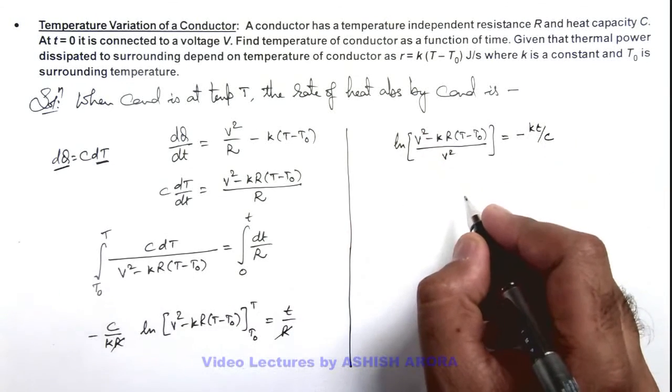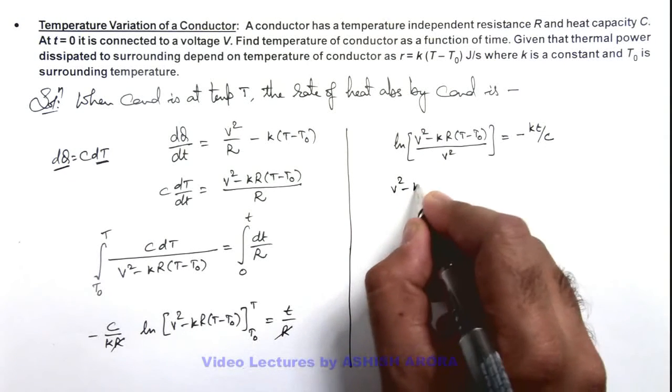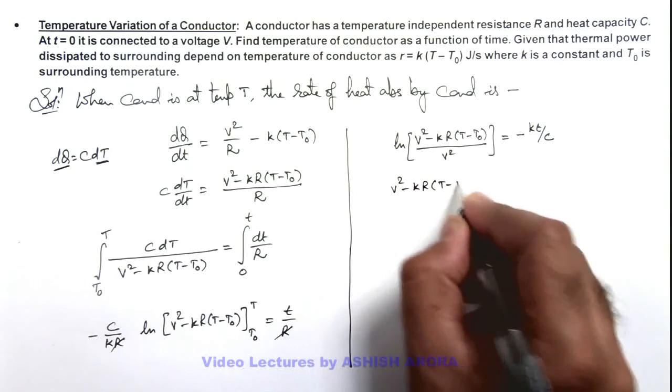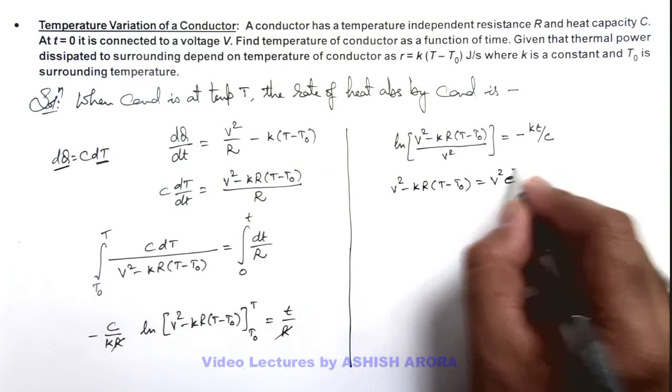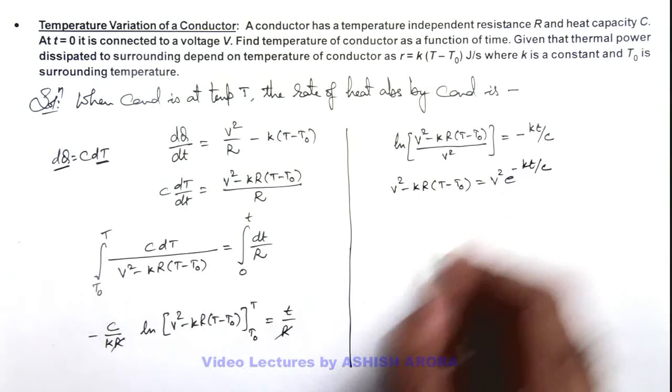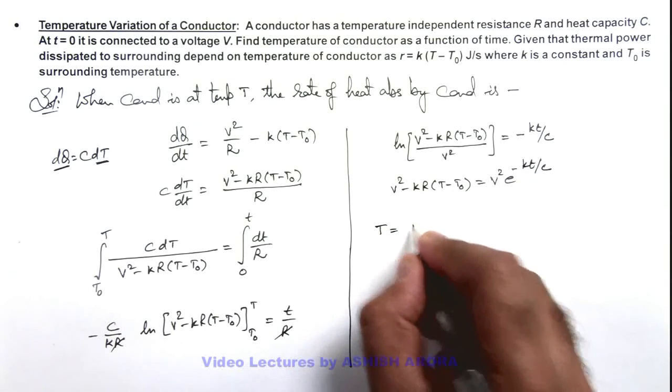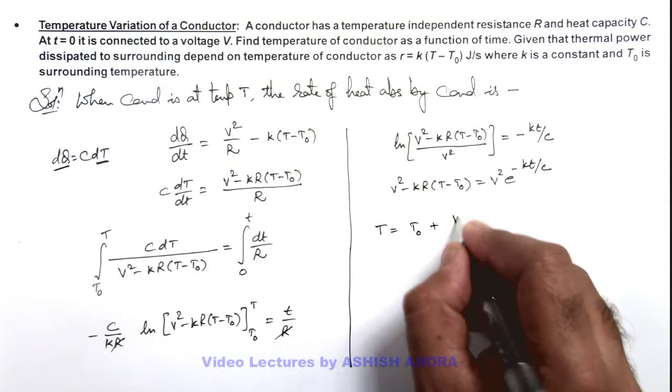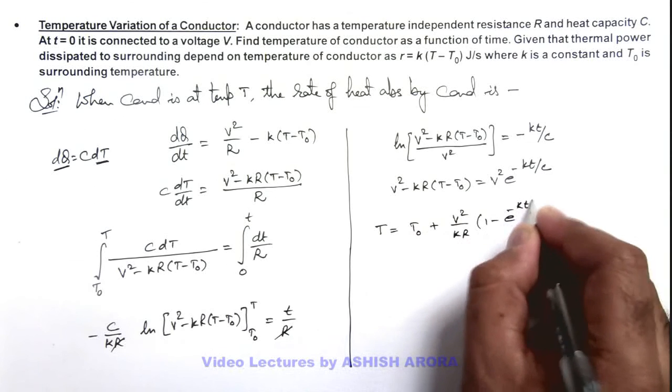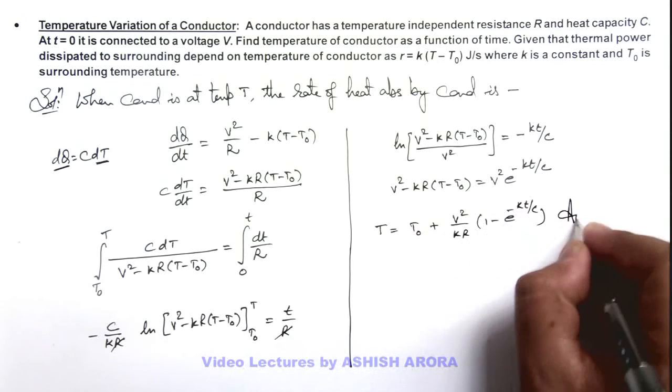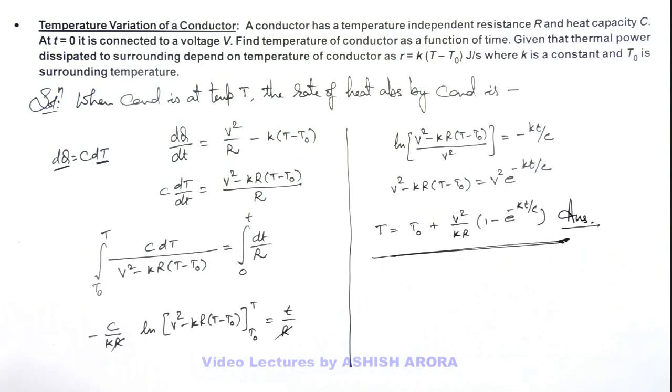Here if we further solve, this will give us V² - kR(T - T₀) equals V²e^(-kt/C). Or simplifying we get the value of T as T₀ + (V²/kR)(1 - e^(-kt/C)). That will be the result of this problem, the temperature of this conductor as a function of time.